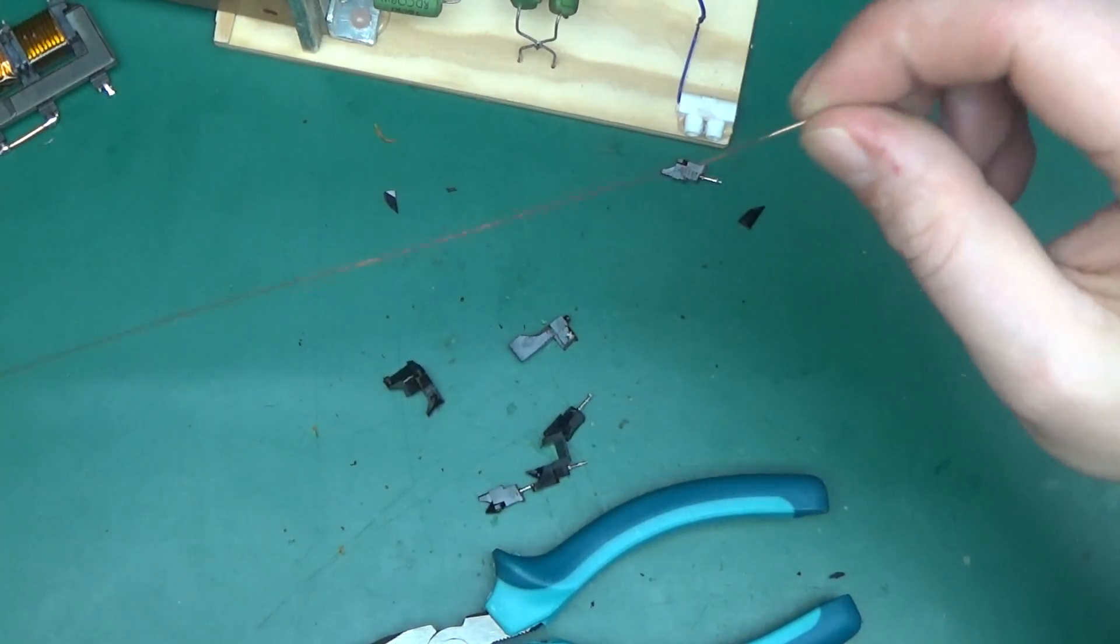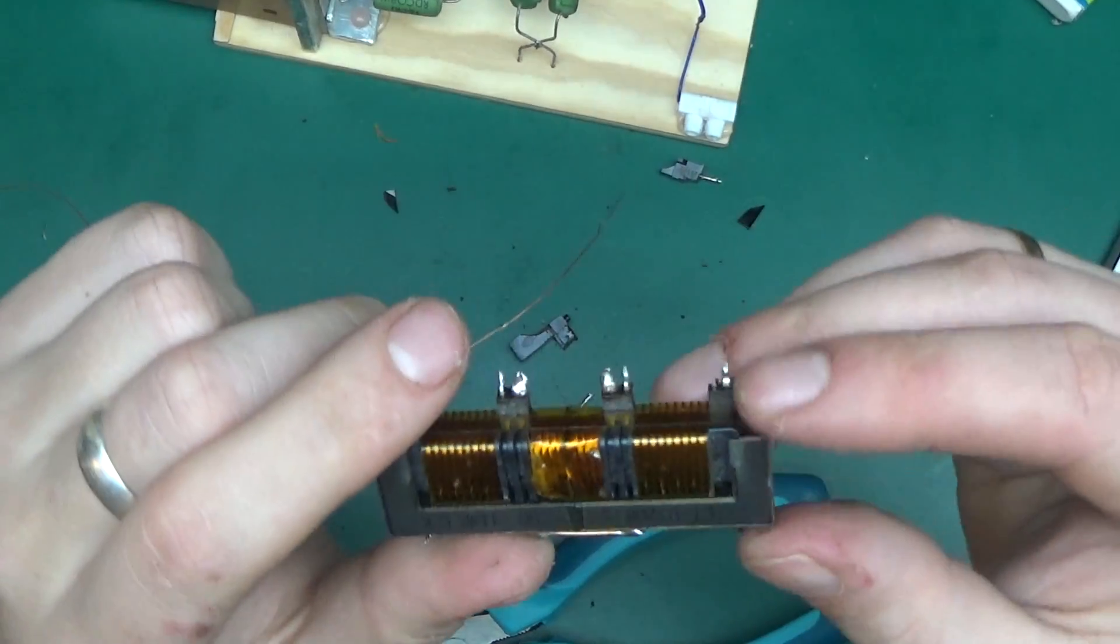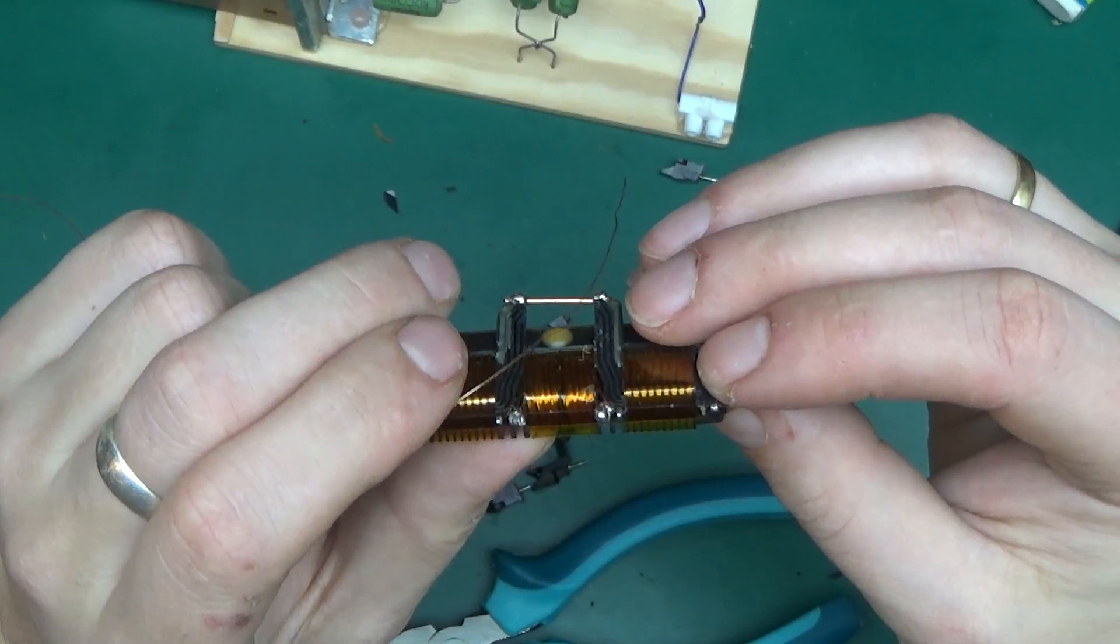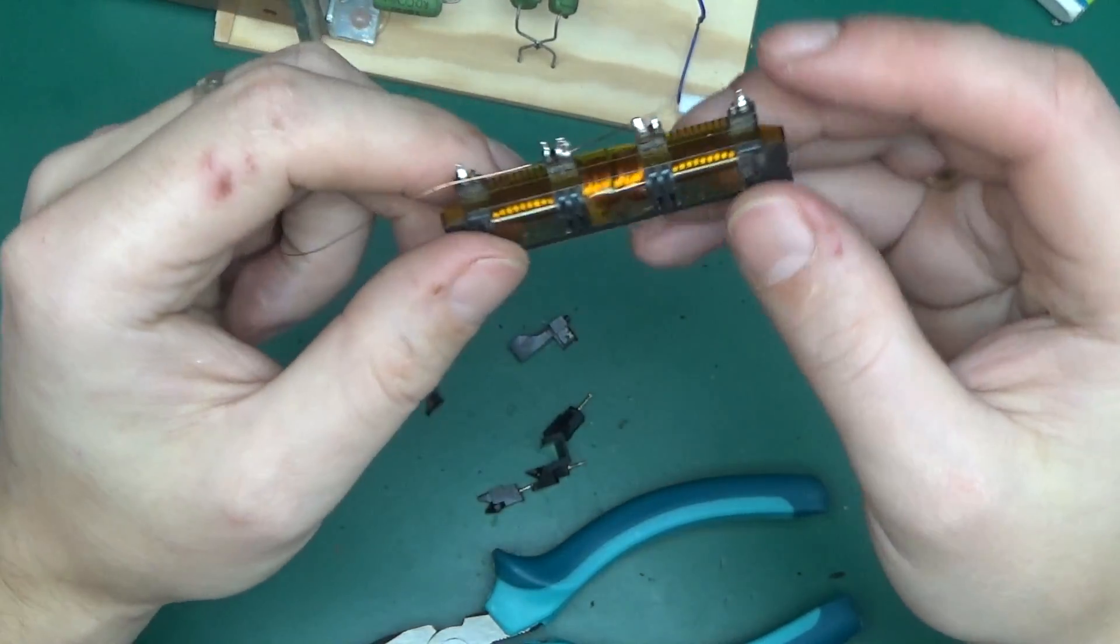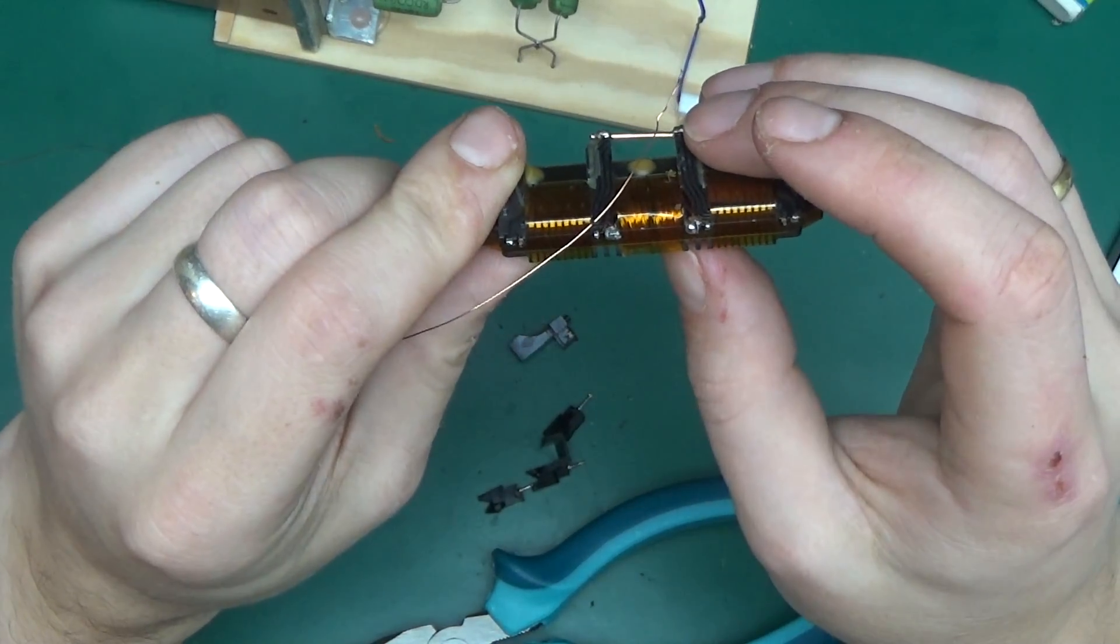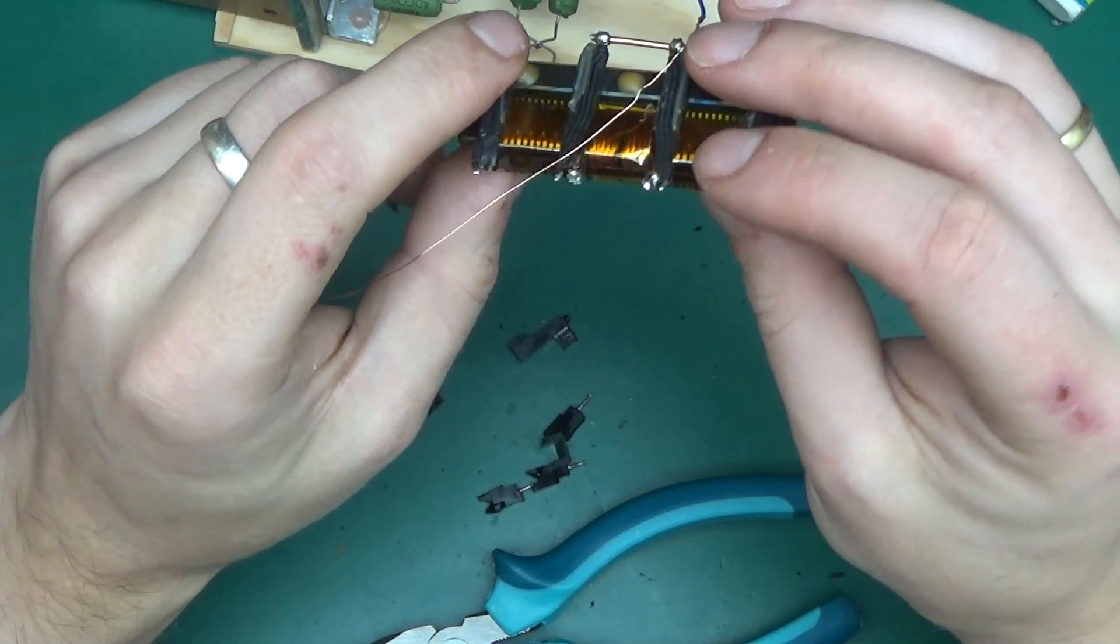So now all that's left is to wind it up. Looking at this I'm estimating, looking at the thickness, I got one, two, three, four, five and there could be two or three layers so maybe 10 turns across and two to three layers deep, so between 20 and 30 turns.